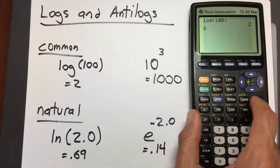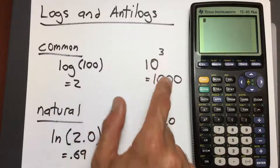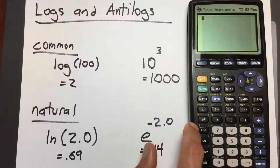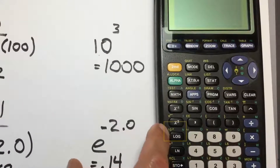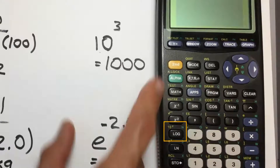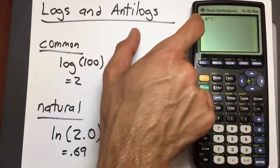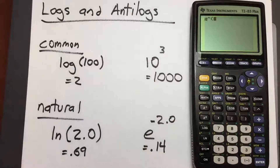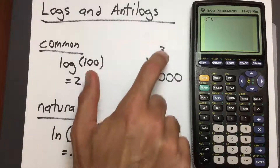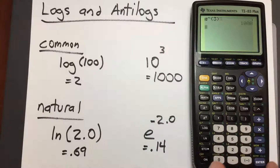To take the anti-common log, clear the screen and look for 10 raised to something. That's right above the log key in yellow text — 10 raised to the x. Press 2nd to reach the yellow function, then press the log key, and now we have 10 raised with parentheses. Enter the number 3, close the parentheses, and press enter. That gives us 1000, exactly as we expected.